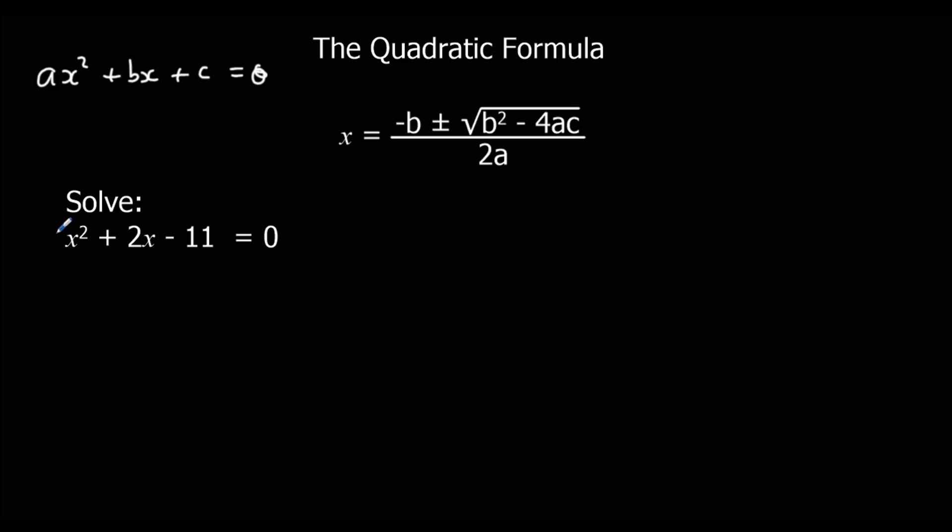You see there's no number in front of the x squared, so that's a 1. So a in this case is 1. How many x squareds have I got? I've got 1x squared. How about x's? The number before the x, that's a 2. So b is 2. The number by itself is minus 11. It's not 11, it's minus 11. It's a negative, a negative 11.